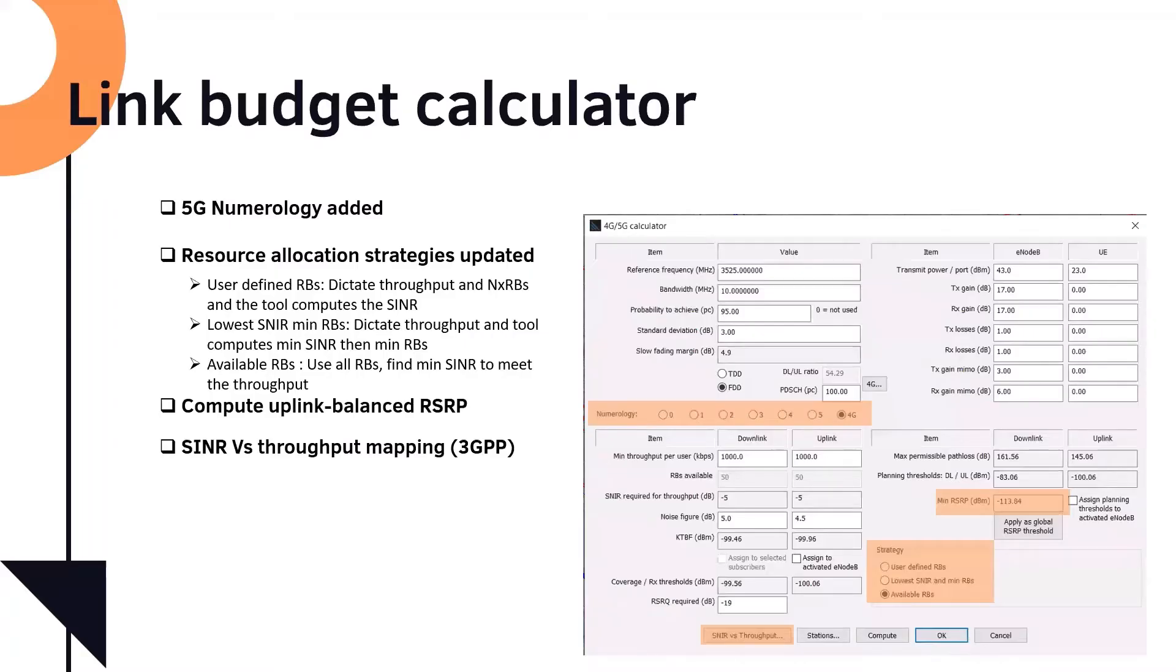So link budget calculator, also we updated this. Previously it was 4G, today is 4G and 5G. So we also updated this calculator to introduce different strategies. So today we can do link budget balancing, and we can consider the numerology order for 5G, and we can also apply different strategies. So this is an automatic link budget calculator. You put the parameters in, and then you put the throughput you need, and the software will reverse engineer, and then tell you what is the SNR, what is the throughput, what is the planning targets, the RSRP you need in order to fulfill these requirements.